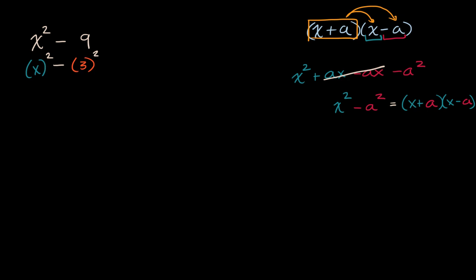Here, what is our a? Our a is three. This is x squared minus three squared, or minus a squared if we say three is a. So to factor it, this equals x plus a, which is three, times x minus a, which is three. So x plus three times x minus three.